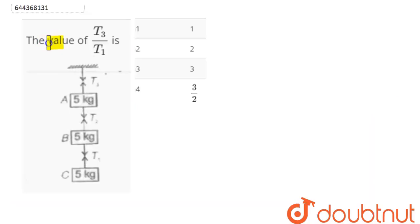Question is, the value of T3 by T1 is. So here we have this tension as T3, this tension as T2, and this tension as T1.